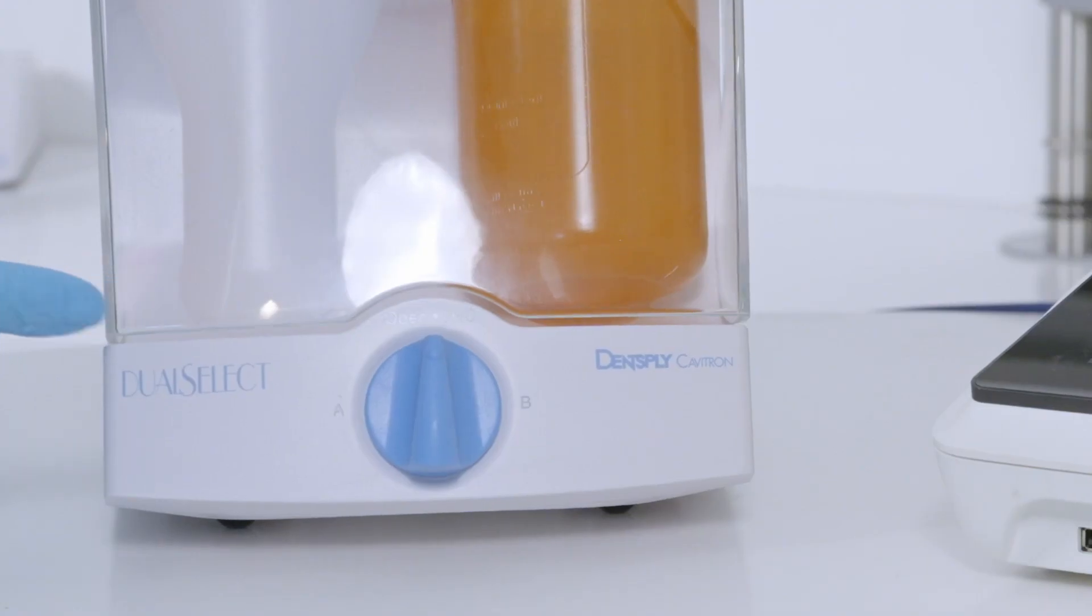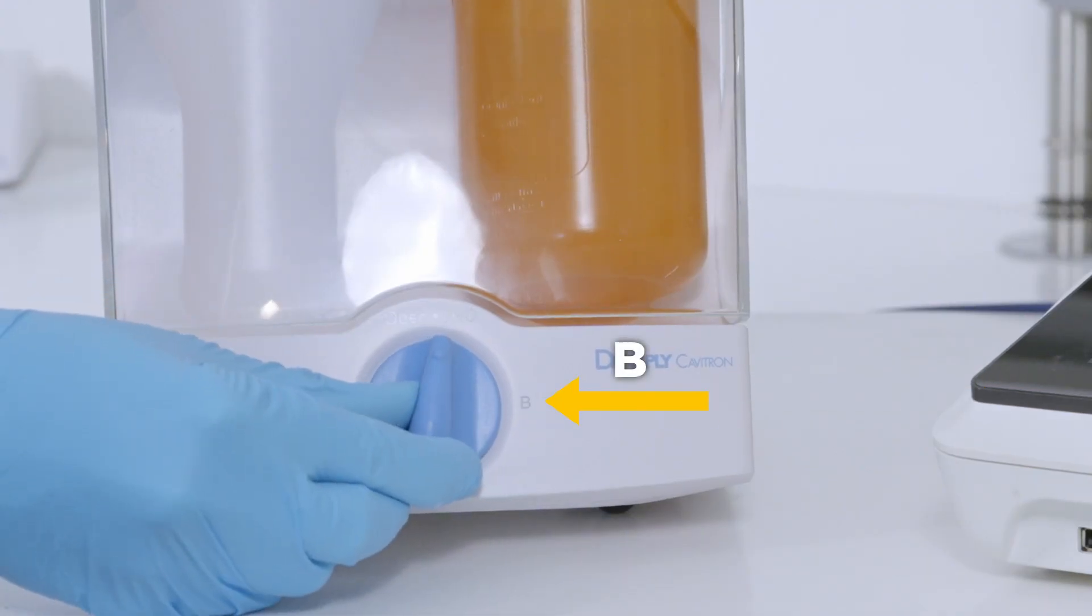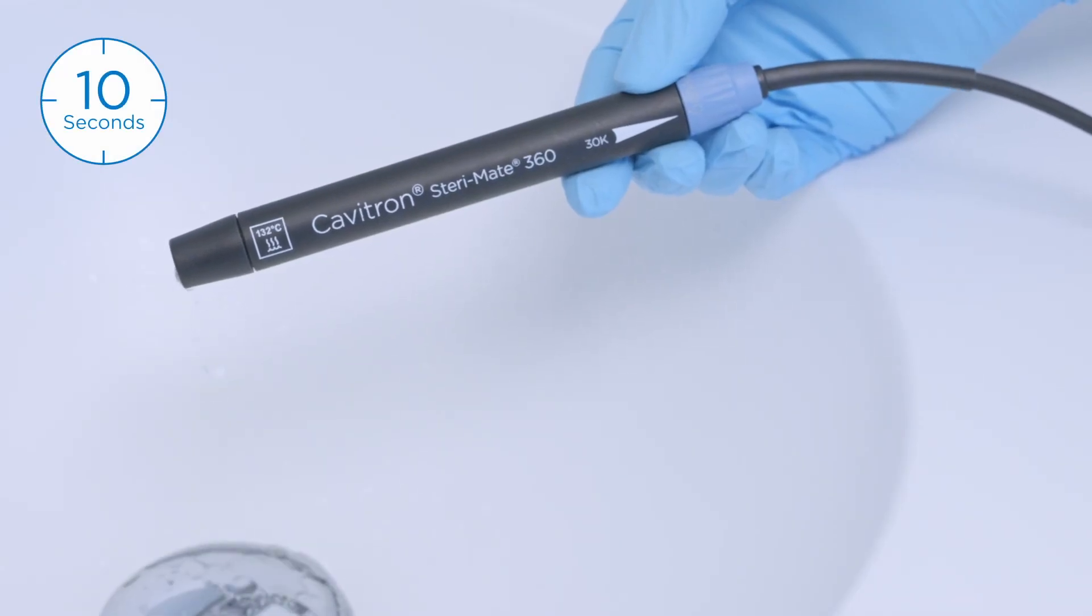Switch selector knob to position B and operate the unit for at least 10 seconds.